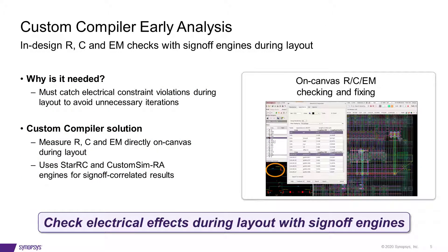Critical nets need to meet strict resistance and capacitance criteria to ensure robust working design. Custom Compiler has built-in assistants that report resistance and capacitance for selected nets. Resistance measurement is the effective resistance seen at the destination, assuming a voltage supply at the source. The assistant also reports resistance on each portion of the interconnect. A built-in version of StarC is called to compute the capacitance of selected nets. The report runs directly on the layout and does not require it to be complete or LVS clean. Results are shown in the electrical reporter dialog, where nets or segments can be selected and highlighted in the physical layout.